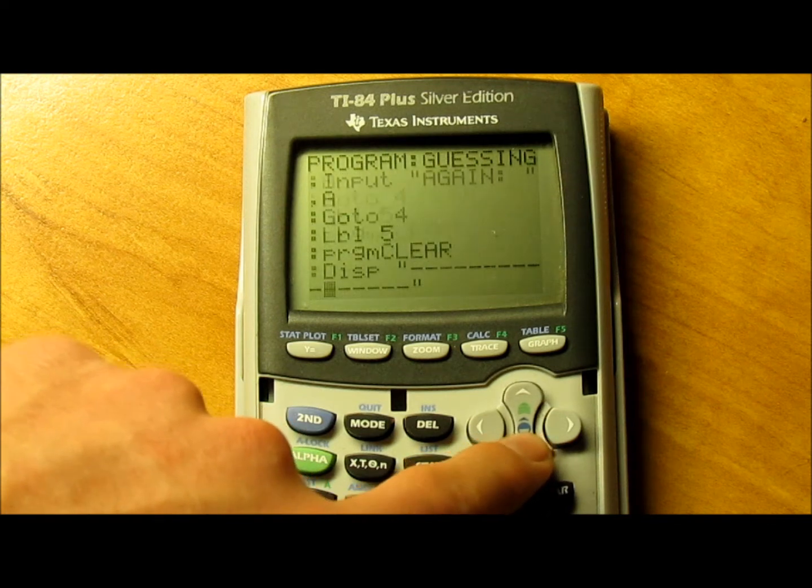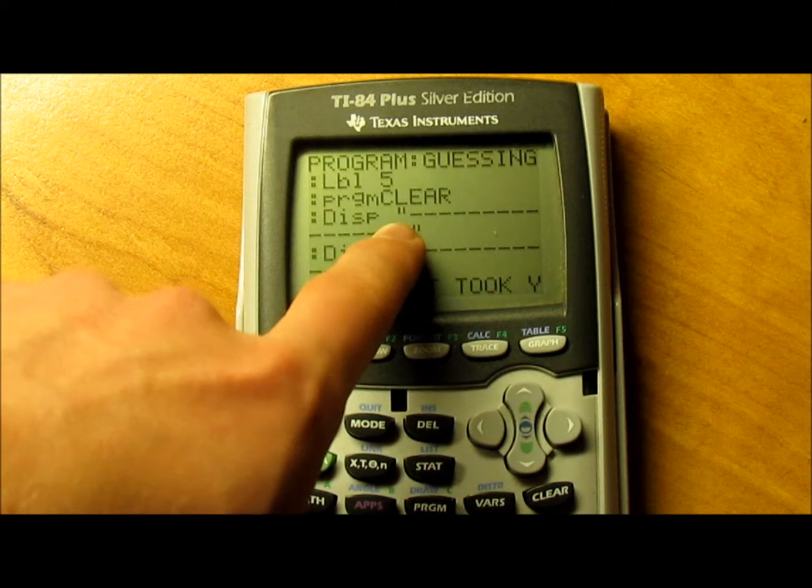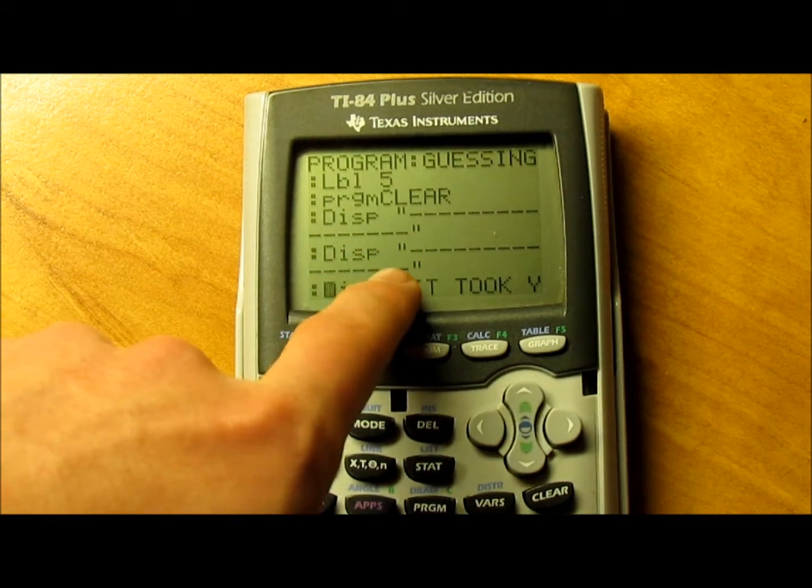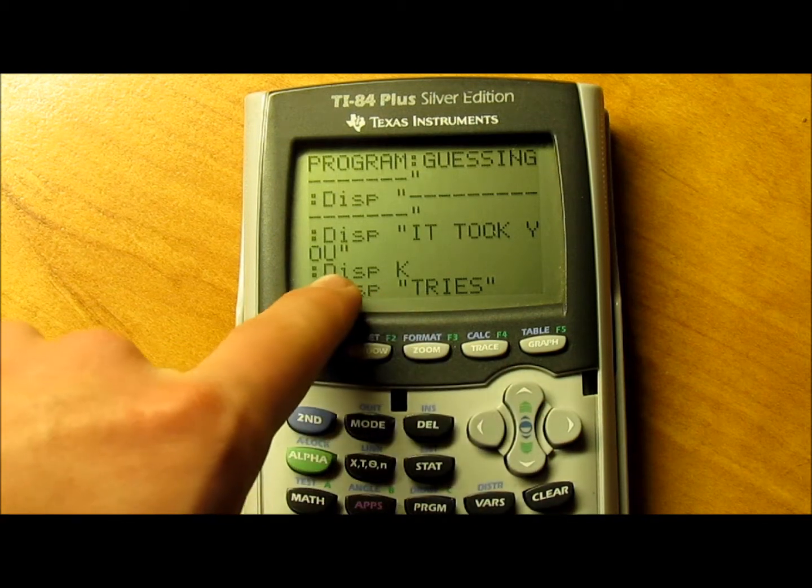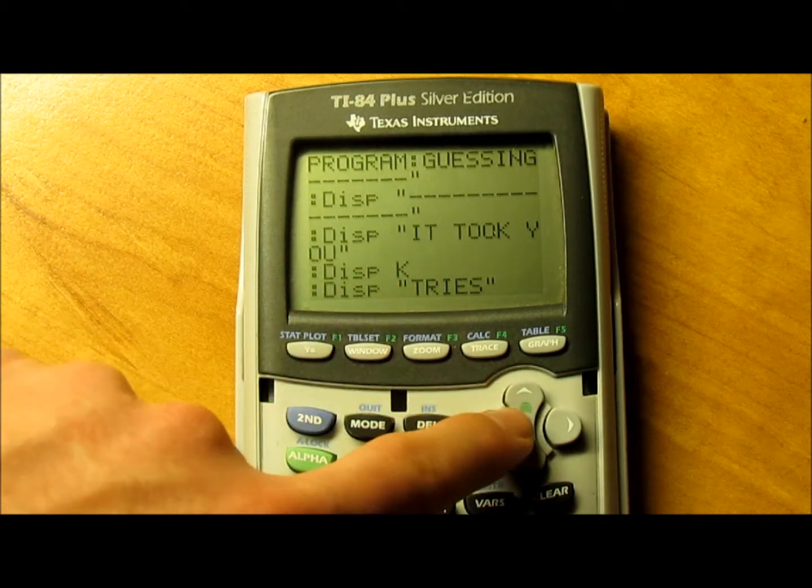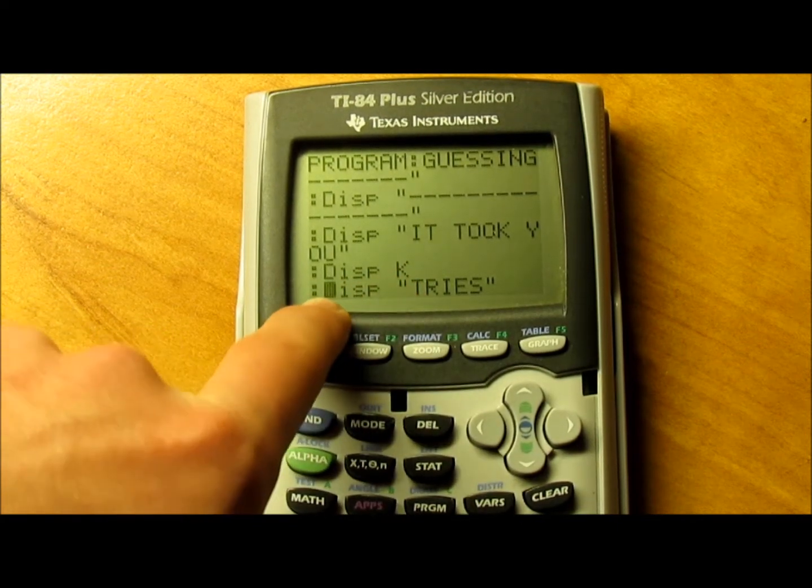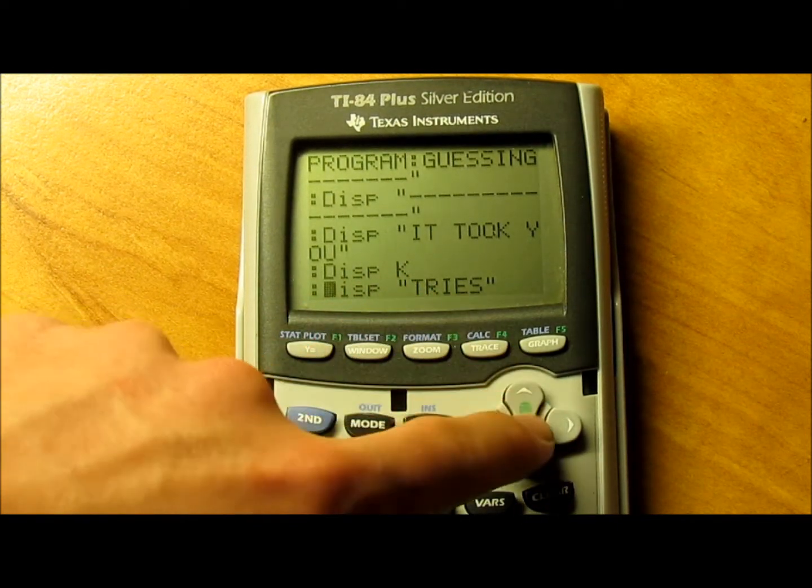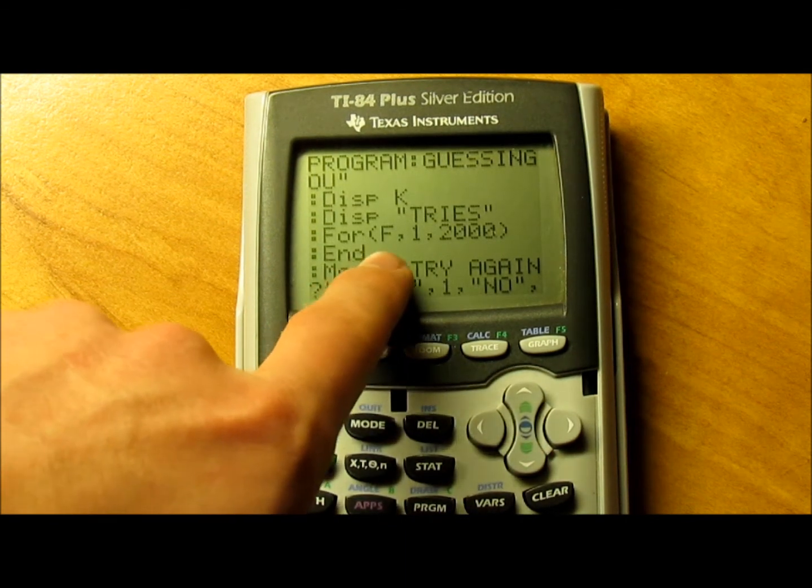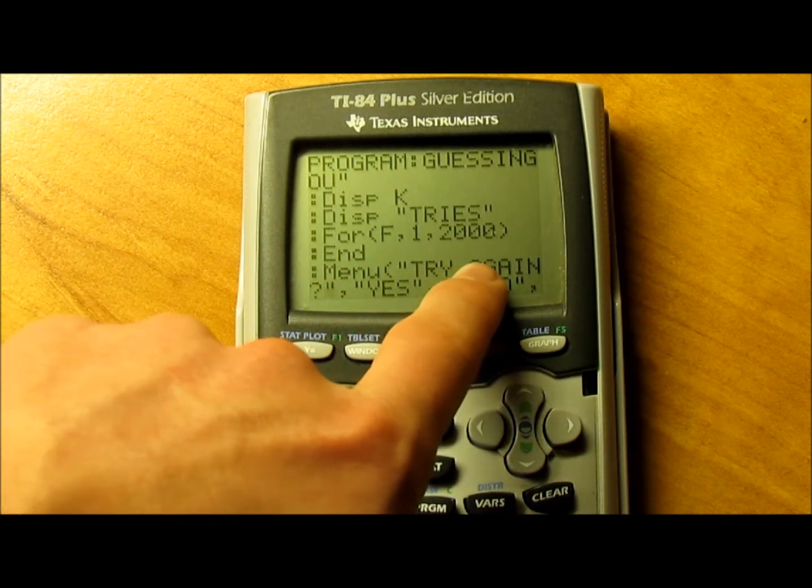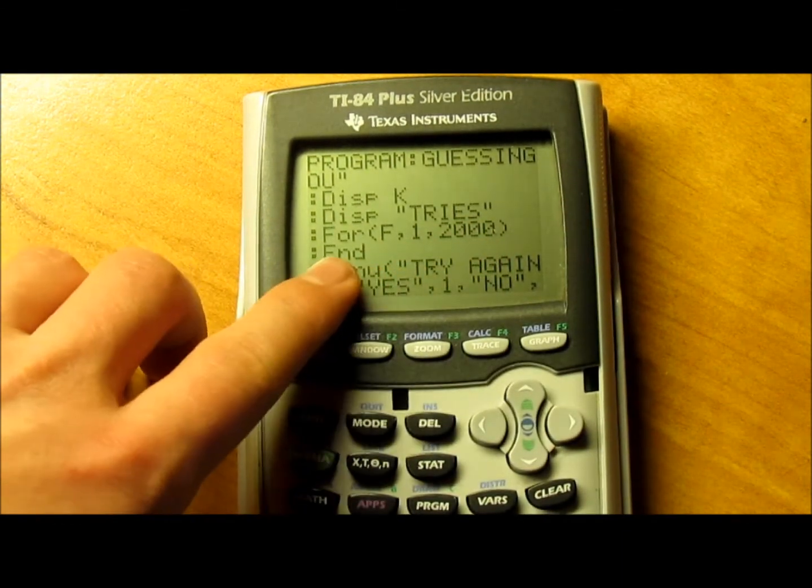Program clear, display the line, then display the line again. Then display it took you, display K without quotations - that's important. Then display tries in quotations. Then 4, F, comma 1, comma 2000 in parentheses, and then end.